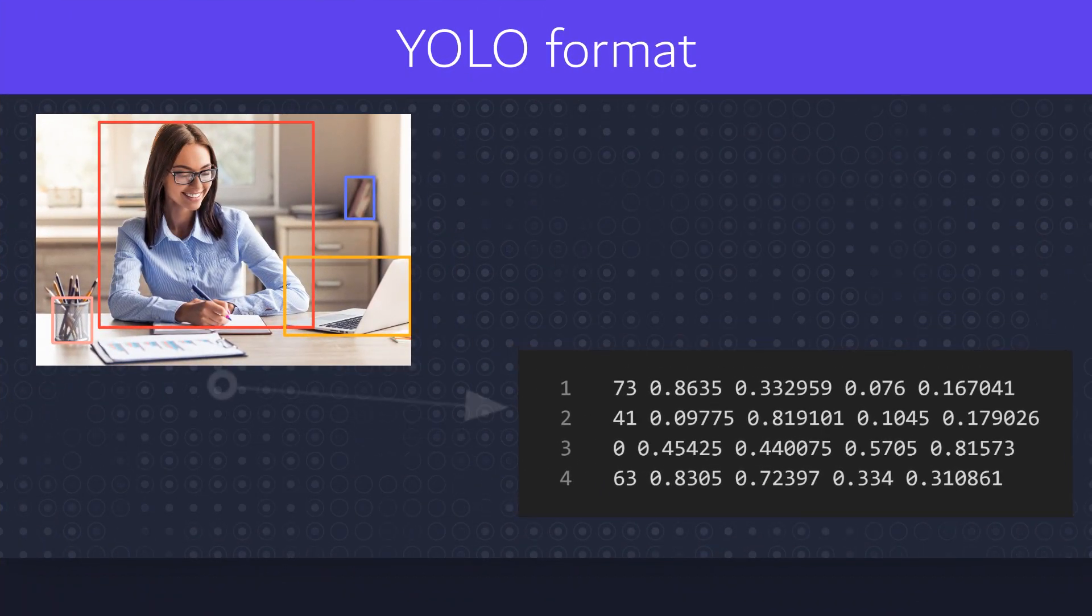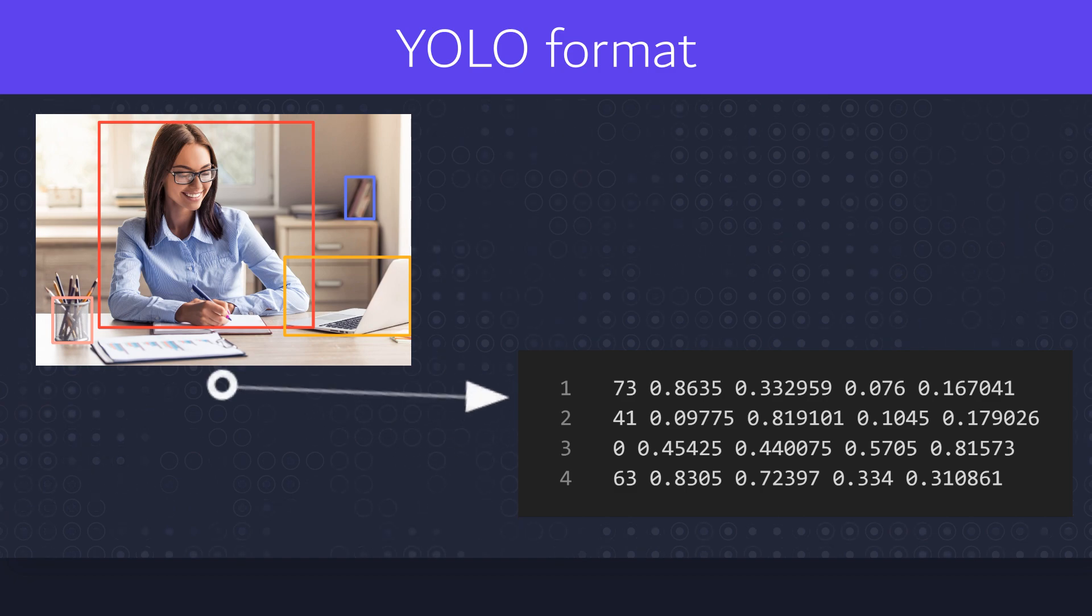In the first section we detected objects on image and saved annotations into txt file. Every image has to have its own txt file with annotations.